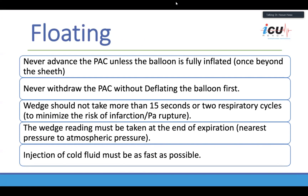Never advance the PA catheter unless the balloon is fully inflated — this prevents complications, as an inflated balloon is blunt and won't pierce the blood vessel. Conversely, never withdraw the PA catheter without deflating the balloon first. Balloon inflation should not be maintained for more than 15 seconds or two respiratory cycles, to minimize the risk of infarction or PA rupture. The wedge reading must be taken at end expiration, which gives the nearest pressure to atmospheric pressure.